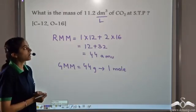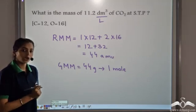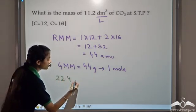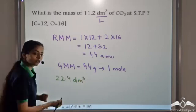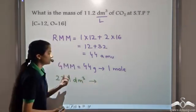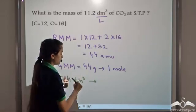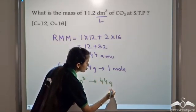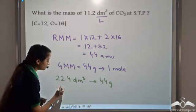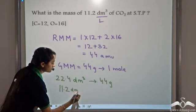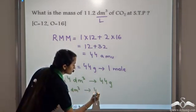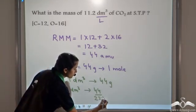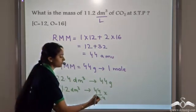We are asked: what is the mass of 11.2 decimetre cube of carbon dioxide at STP? We know at STP, 22.4 litres or 22.4 decimetre cube of any gas corresponds to the gram molecular mass of the gas. So 22.4 decimetre cube of carbon dioxide weighs 44 grams. If we have 11.2 decimetre cube, that will weigh 44 divided by 22.4, multiplied by the volume occupied, which is 11.2.